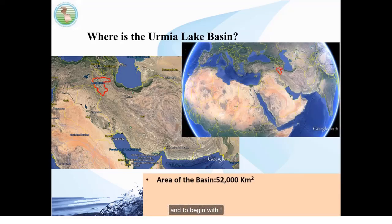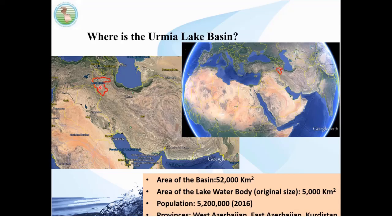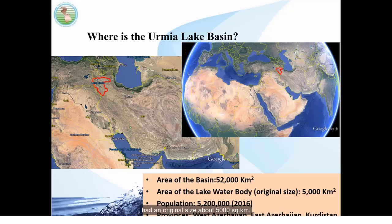To begin with, let's see where Iran is — here in the Middle East. The Urmia Lake Basin is one of the six main basins of Iran, which is an indirect or closed basin, meaning all water ends up in Urmia Lake at the center of the basin. The basin size is about 52,000 square kilometers, and the lake water body at its original size was about 5,000 square kilometers.